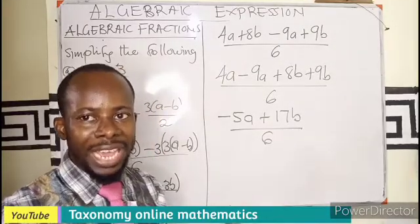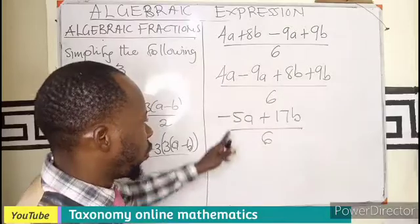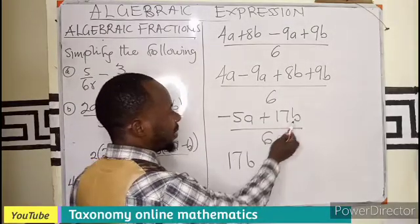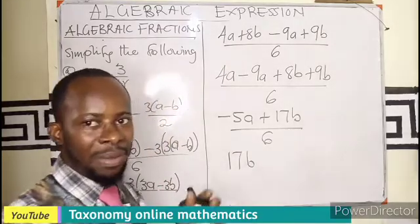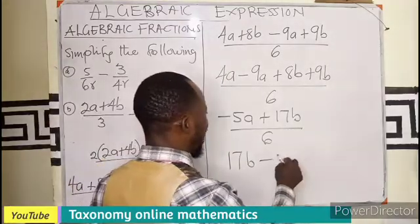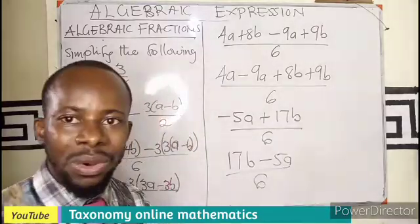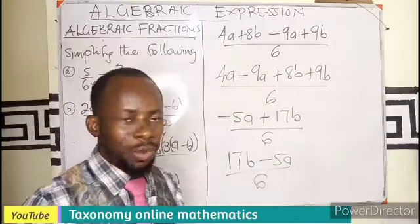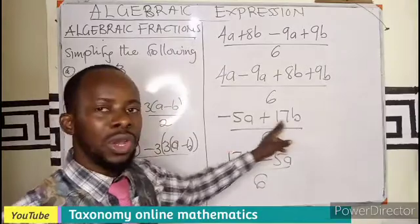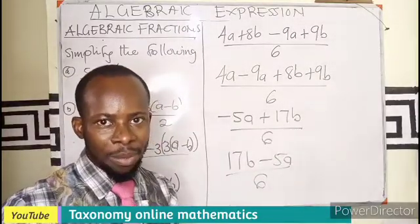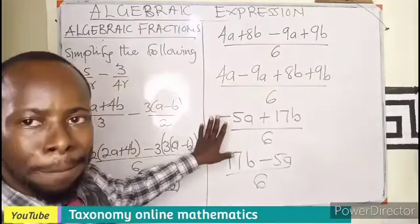If we don't like negative to be in front of a number, you can change this to become 17b as positive coming first, then minus 5a all over what? 6. It is still the same answer. We are only changing the position of the 5 and the 17. I believe this case is correct.